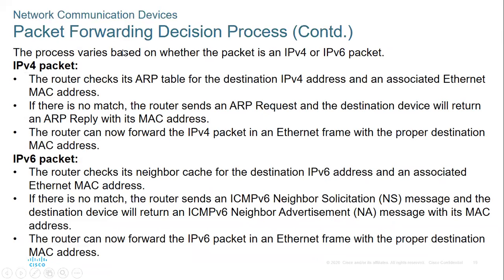The forwarding process varies based on whether we are using an IPv4 or IPv6 packet. For an IPv4 packet, the router checks its ARP table for the destination IP address and an associated MAC address. If there's no match, the router sends an ARP request, and the device returns an ARP reply with its MAC address.